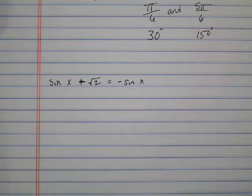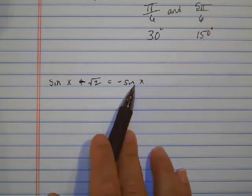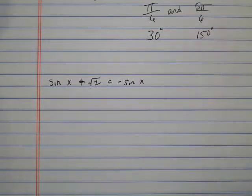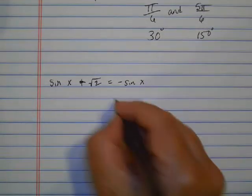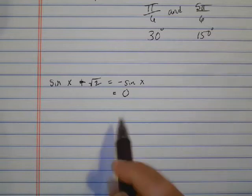Let's look at this second example. I have sine of x plus the square root of 2 equals negative sine x. So in order to solve an equation like this, we're going to need to set one side equal to 0. And you know you did that a lot in Algebra 2 when it came to factoring.